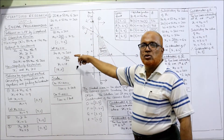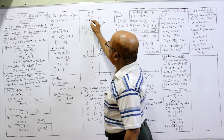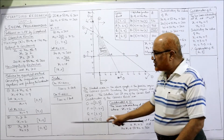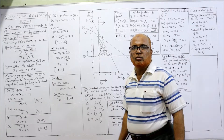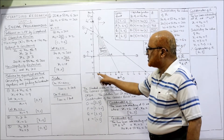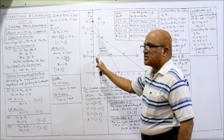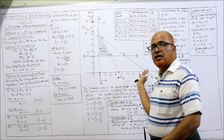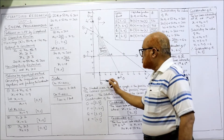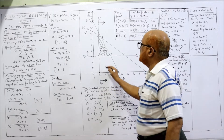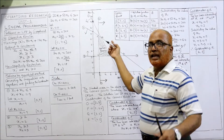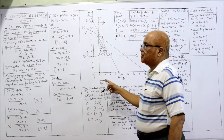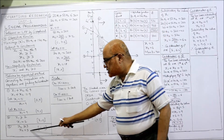Less than or equal to type means the arrow should be towards the origin — downward and left arrow. First constraint is complete. Second constraint: x1 = 2, x2 = 0. Draw a straight line parallel to the y-axis. It says greater than or equal to, so the arrow is away from the origin — right side. If it were less than, the arrow would point towards the origin.